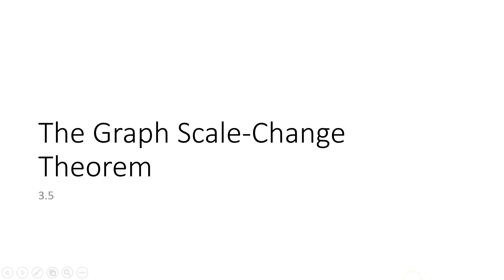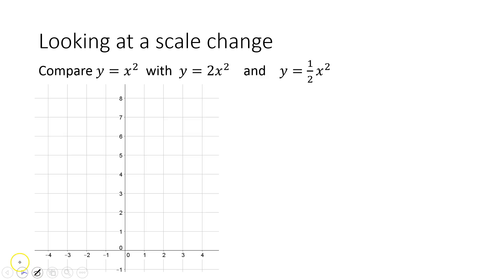Let's talk about the graph scale change theorem today. Earlier in the chapter we had the graph translation theorem, and now we're extending it to the scale change theorem where we're going to be stretching, shrinking, and multiplying graphs by things to see what happens. We're going to start by looking at a scale change and see what happens: comparing y = x², y = 2x², and y = ½x².